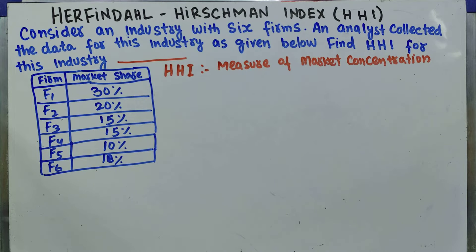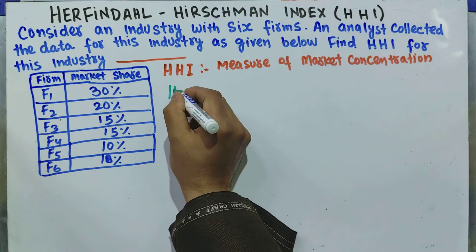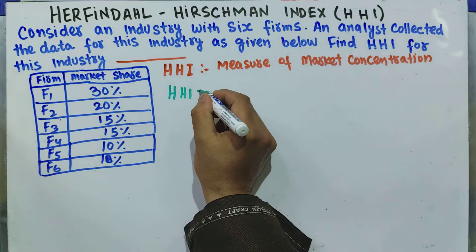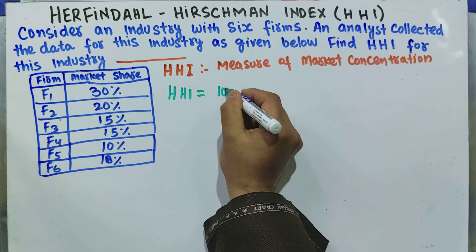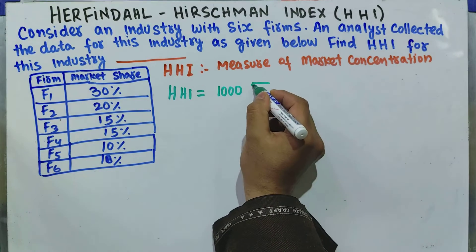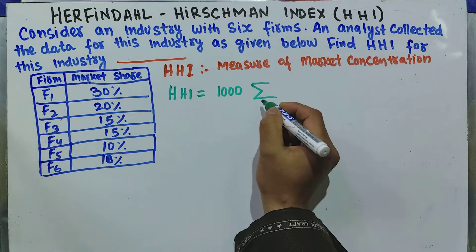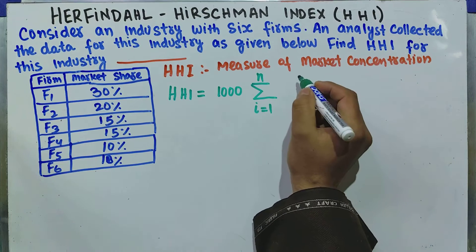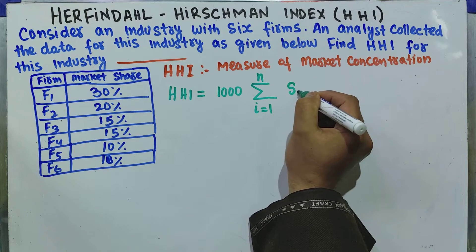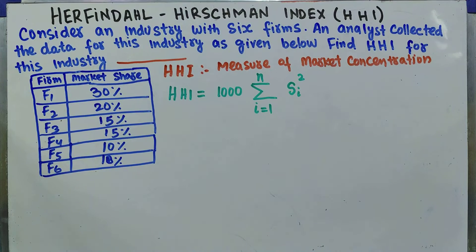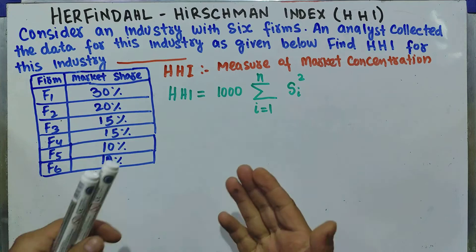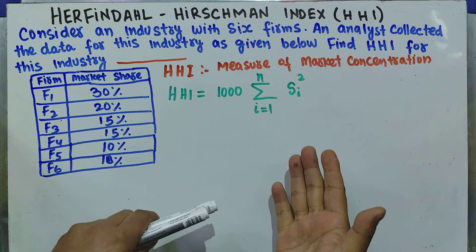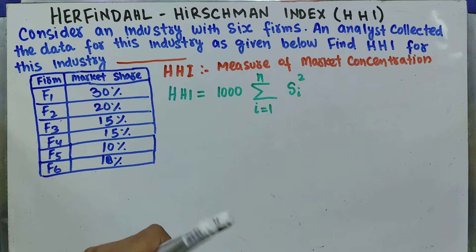Let me write the formula first. HHI is calculated as: HHI = 10,000 times the summation from i = 1 to n of Si squared. That means we square the market share of each firm, add them all up, and multiply by 10,000.